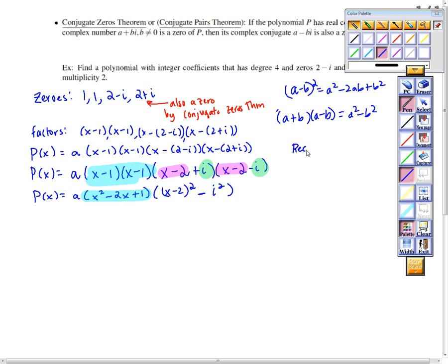Recall, i squared is negative 1. So let me color code this for you. That became this part, the green part is the i's. So I have P of x equals a times x squared minus 2x plus 1. Now I'm going to expand this out using this up here.